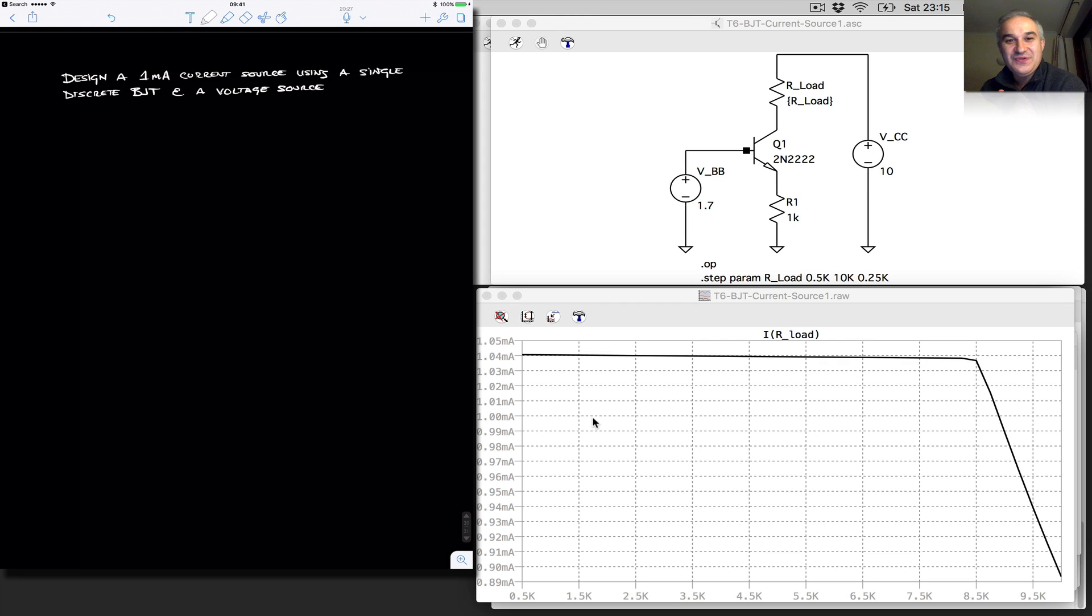Hello and welcome back. In the previous video we designed current sources using a single transistor, discrete, and two supplies. In this design problem we are asked to design a current source, in this case a one milliamp current source, using a single discrete BJT transistor and a single voltage supply.